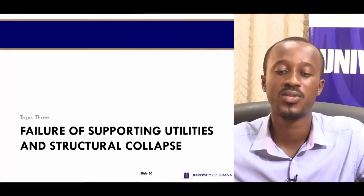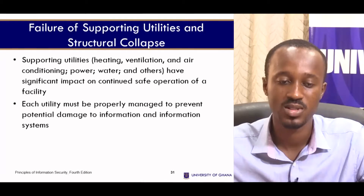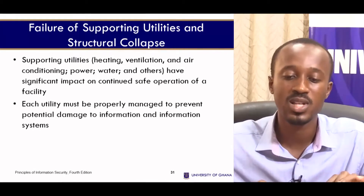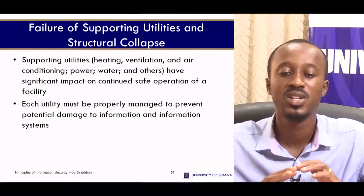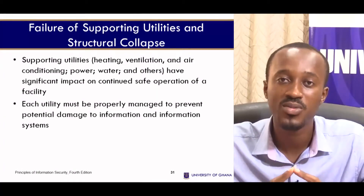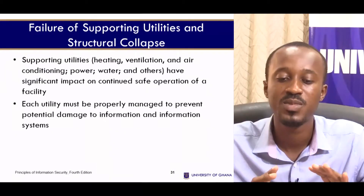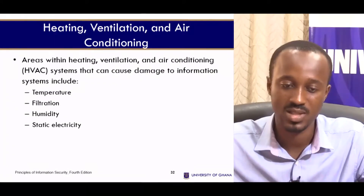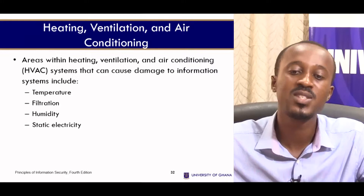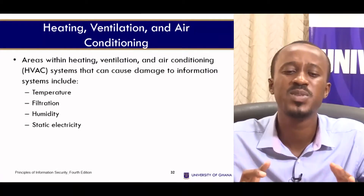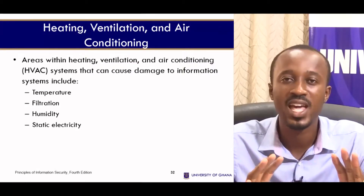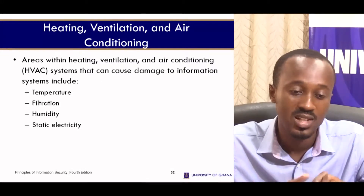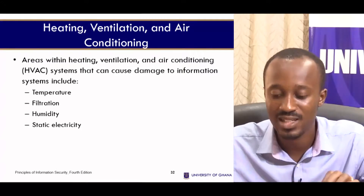Supporting utilities like heating, ventilation, and air conditioning, power, water, and others have a significant impact on the continued safe operation of a facility. Each utility must be properly managed to prevent potential damage to information and information systems. Areas within HVAC systems that can cause damage include temperature, filtration, humidity, and static electricity.